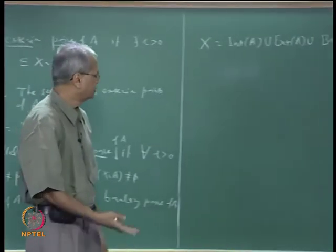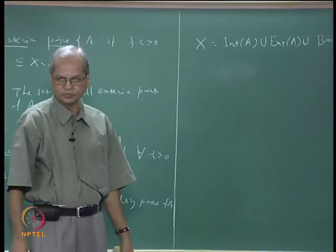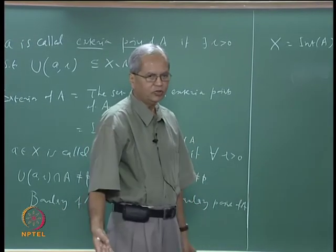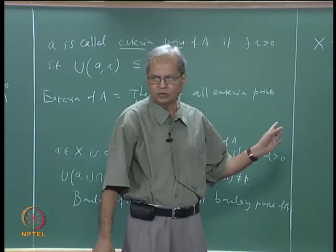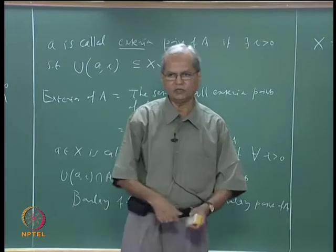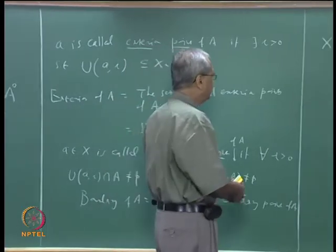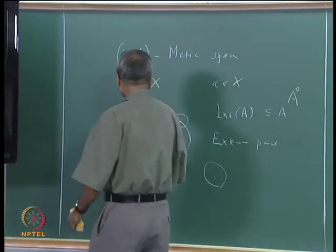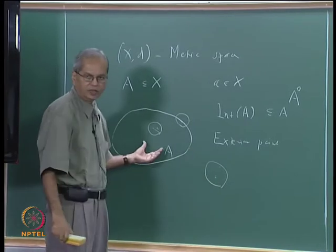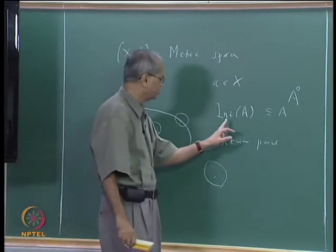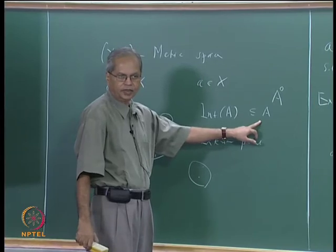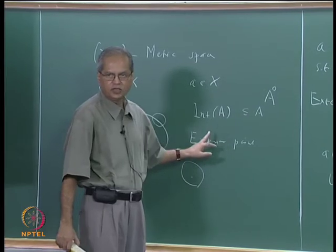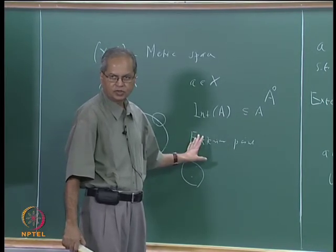Of course some of these sets may be empty. For every A, for example, we have seen examples where interior is empty. Similarly there can be sets where exterior is empty. Now let us go to the next important concept which depends on interior point. If every point of A is an interior point, since interior of A is always contained in A, if the reverse inclusion is also true, then it is called an open set.